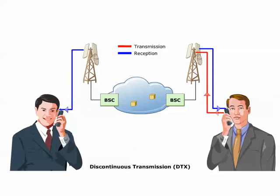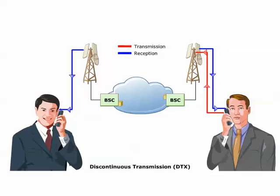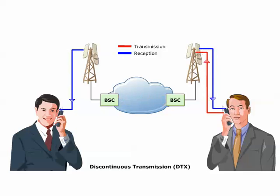Discontinuous transmission is a method of saving battery power for the MS. MS with the DTX function detects the input voice and turns the transmitter on only while voice is present. When there is no voice input, the transmitter is turned off.